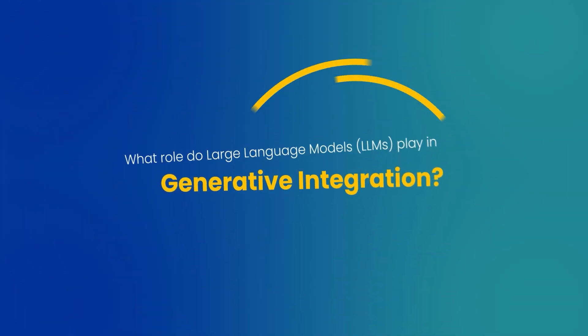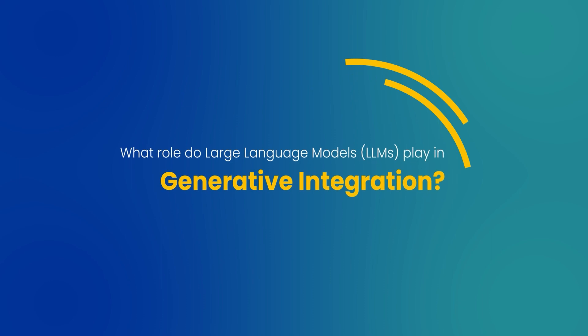What role do LLMs play in generative integration? In generative integration, LLMs are used to enhance the communication and interaction between users and applications. They enable systems to understand and generate natural language, allowing for more seamless and intuitive user experiences.